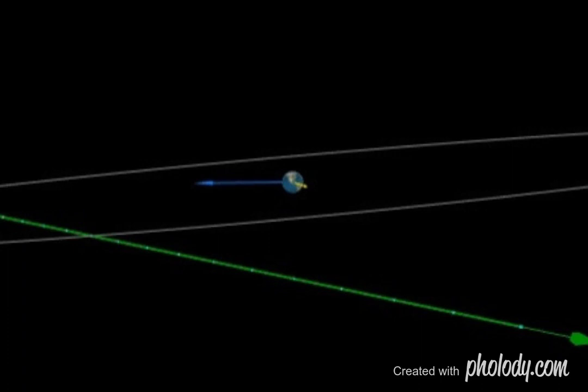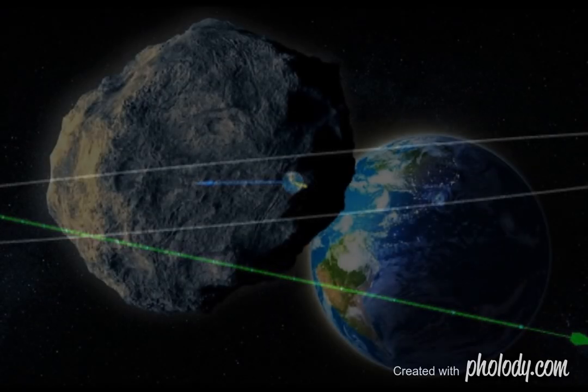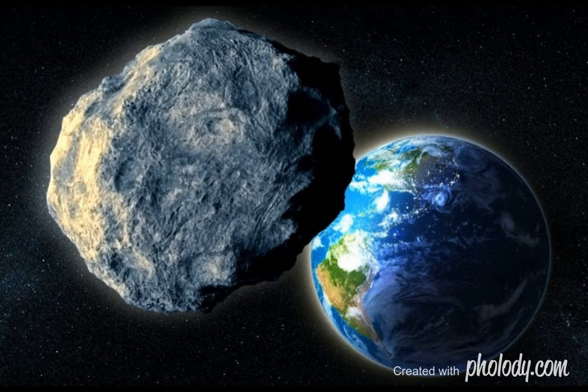The good news is, asteroids have approached Earth much nearer and missed them in the past. On August 10, it will fly past the Earth traveling at a speed of 4.67 kilometers per second.